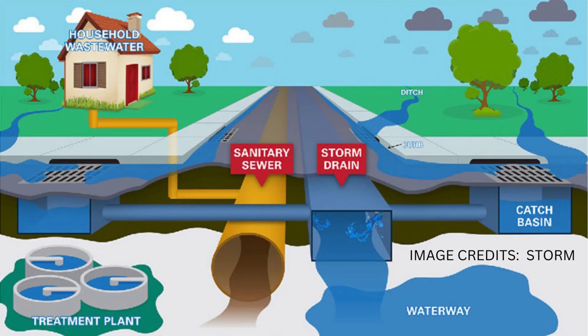There are two main types of sewers: sanitary sewers and storm sewers. Sanitary sewers carry domestic and industrial wastewater to treatment plants, while storm sewers manage rainwater runoff and prevent flooding during heavy rainfall. In some cases, both types of sewers may share the same network, creating a combined sewer system.